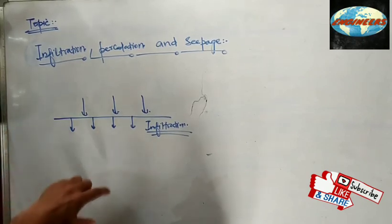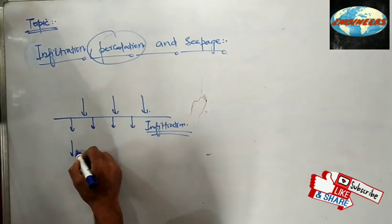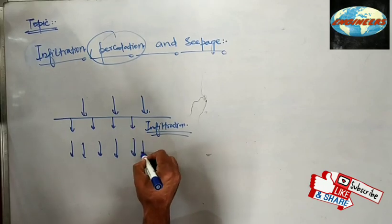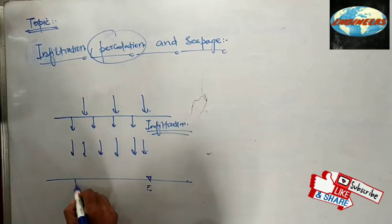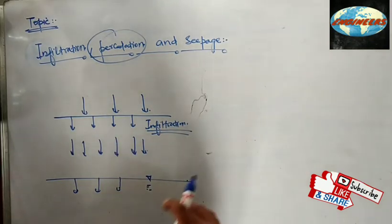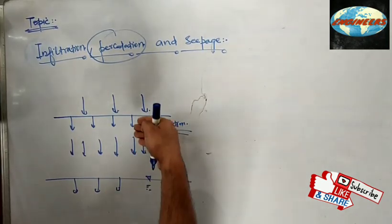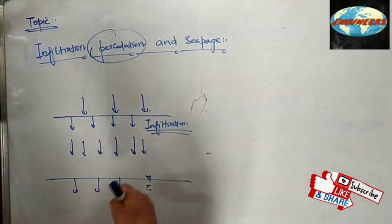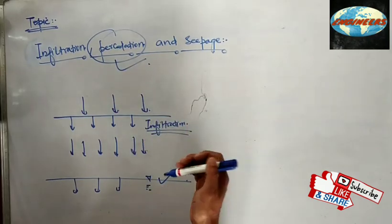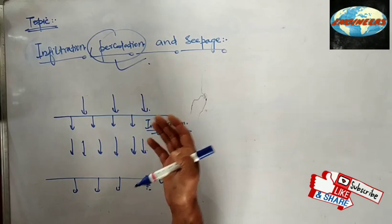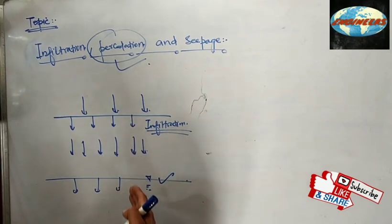Now what about percolation? As this water moves inside the earth and joins a water table, that is called percolation. So the movement of water due to gravity inside the earth, when the water moves downward and joins the water table, that is called percolation. Infiltration is the movement of water from the surface into the earth.